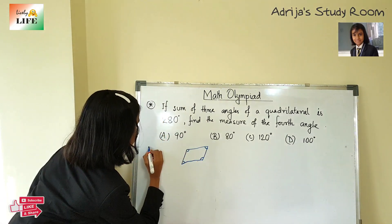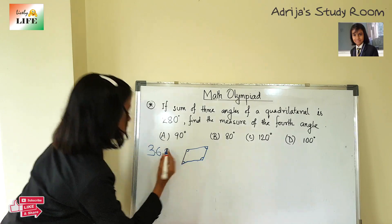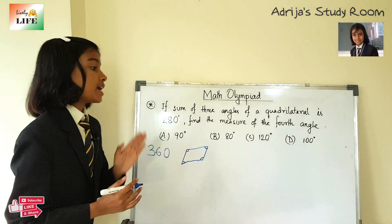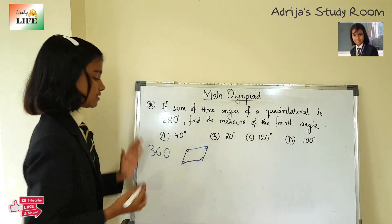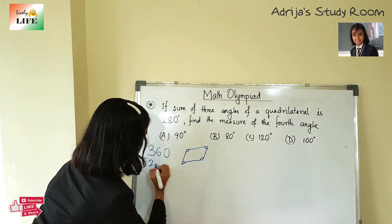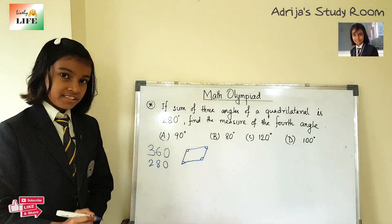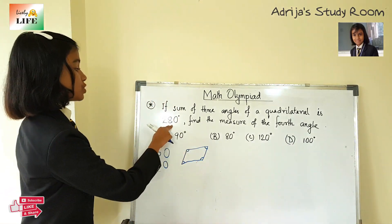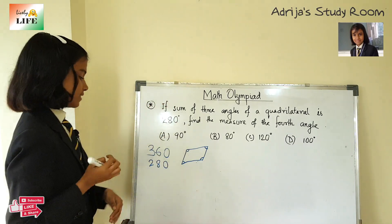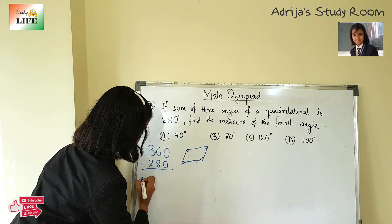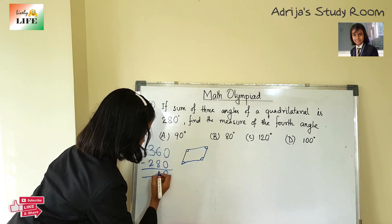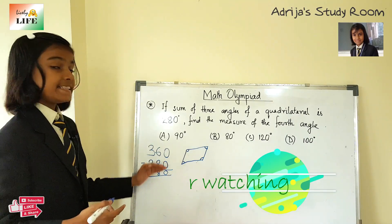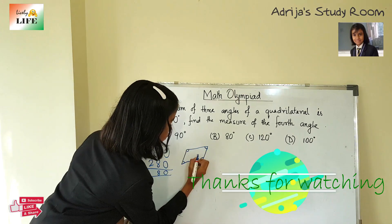The sum of all four angles is 360 degrees, and the sum of the three given angles is 280 degrees. To find the measure of the fourth angle, we subtract 280 from 360. After subtracting, we get 80 degrees, so the measure of the fourth angle is 80 degrees.